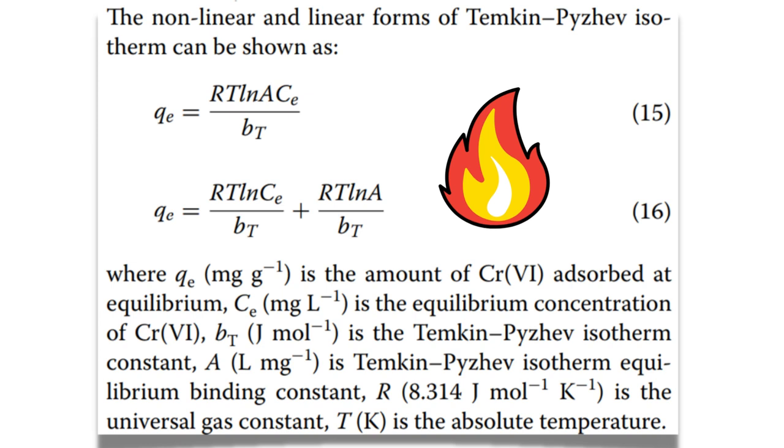Where QE is the amount of adsorbate adsorbed at equilibrium. CE is the equilibrium concentration. And BT is the Temkin-Pyzhev isotherm constant. A is the Temkin-Pyzhev isotherm equilibrium binding constant. And R is the universal gas constant. And T is the absolute temperature.